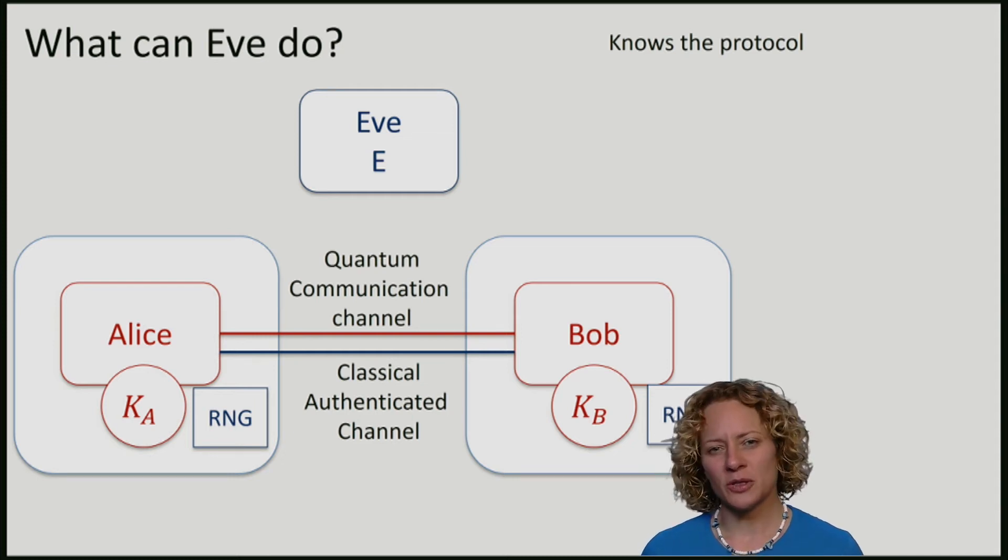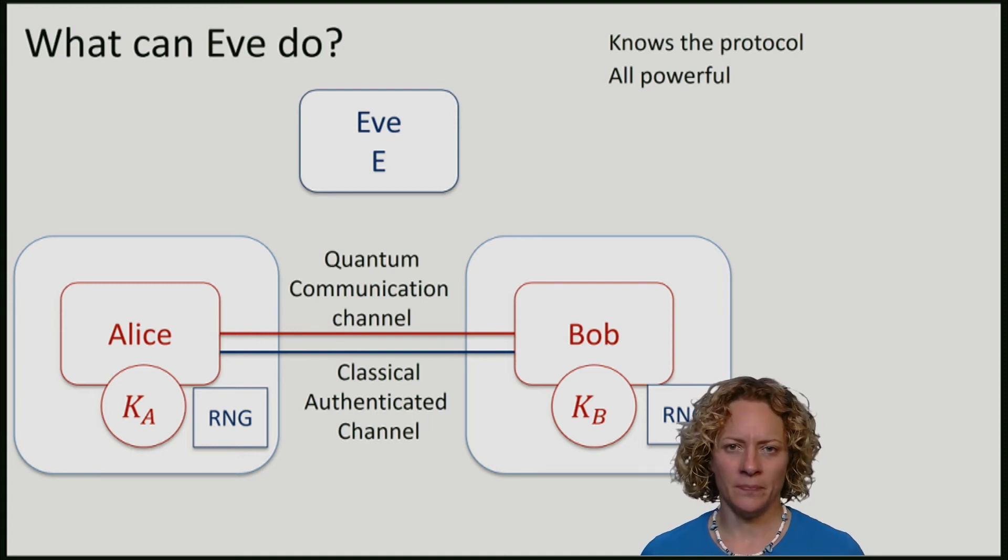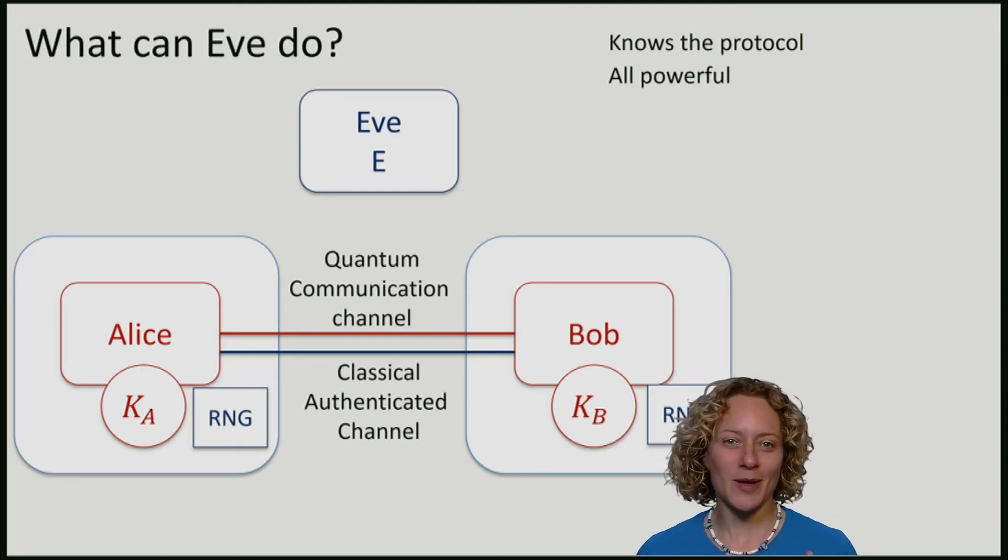Eve in quantum key distribution is all-powerful. You can think that Eve can control all the universe except the labs of Alice and Bob. In particular, Eve has a quantum computer, an arbitrary quantum memory, and she spends essentially all her time trying to read the secrets of Alice and Bob.